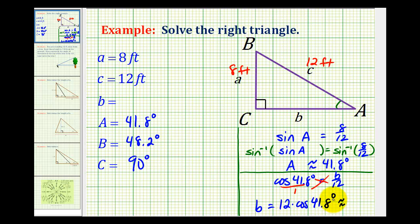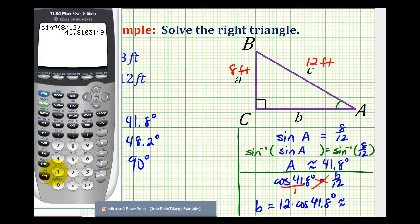So let's go back to our calculator and determine this product. So we have 12 times cosine 41.8 degrees. B is approximately 8.9 feet.